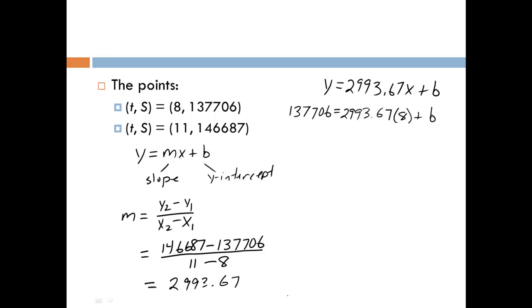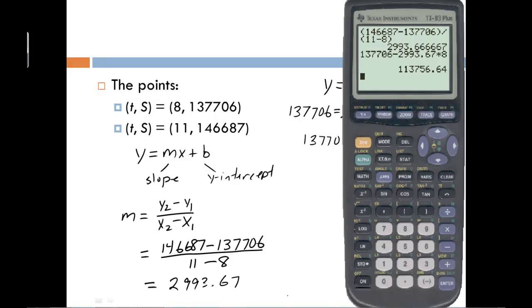All we need to do is subtract 2,993.67 times 8 from both sides of the equation, and we can get b. Again, we can compute this in our calculator, and we get 113,756.64.